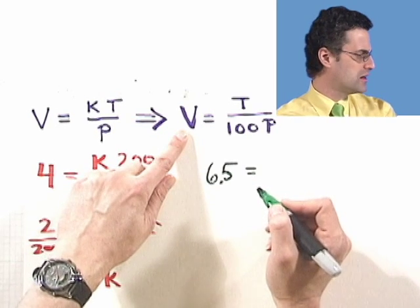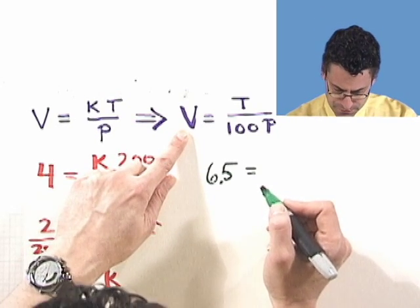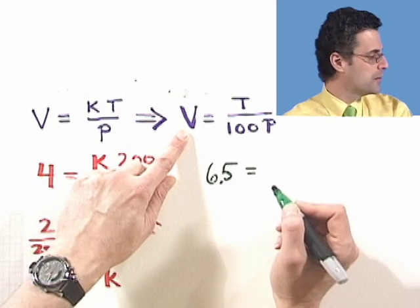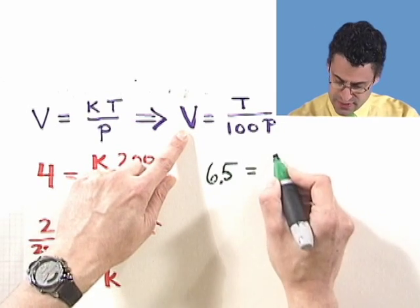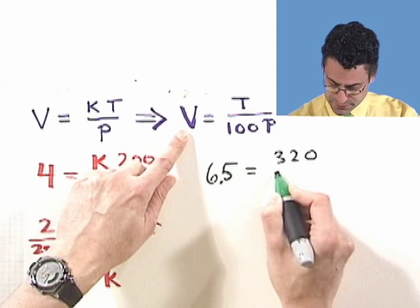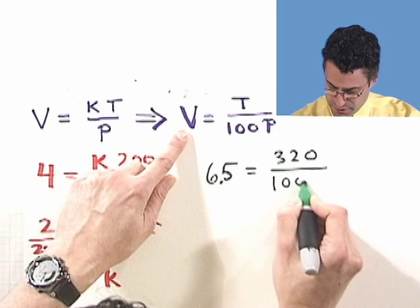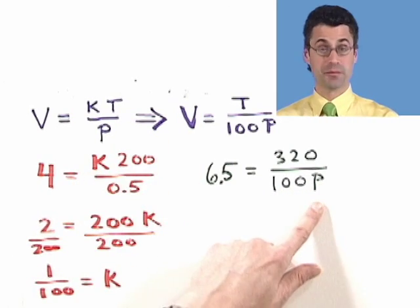And that equals, let's see, what do I know? The temperature, I'm told, is 320, and the pressure is what I'm trying to figure out. So that's going to be over 100P. You see, everything is known except the P.